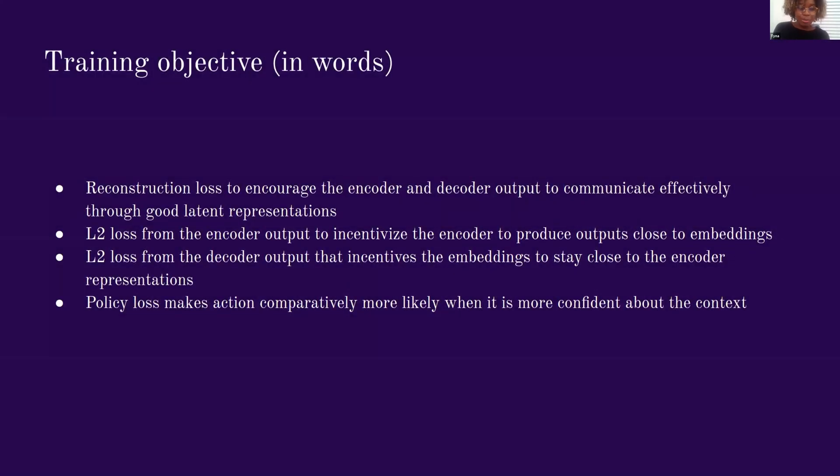So in words, what was all that math about? The first term of the numerator is the reconstruction loss to encourage the encoder and decoder to communicate effectively through good latent representations. Then we have L2 loss from the encoder output that incentivizes the encoder to make representations that are close to the embeddings. And we also have an L2 loss from the decoder output that incentivizes the embeddings to stay close to encoder representation, because the embedding space is dimensionless and we wouldn't want it to grow indefinitely.